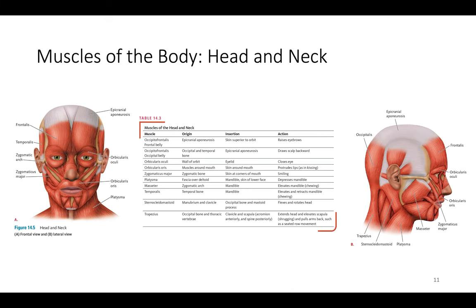The muscles of the head and neck start with the occipitofrontalis — the frontalis region in front and occipitalis toward the back. It forms the epicranial aponeurosis, a thin tendon sheath running from front to back underneath the hairline, covering all skin superior to the orbit. It allows us to raise our eyebrows. The occipital belly at the back draws the scalp backward slightly — not a muscle we use much.